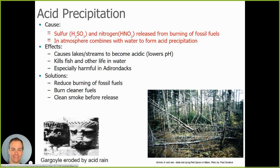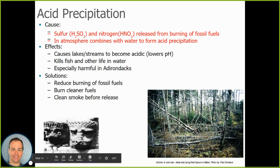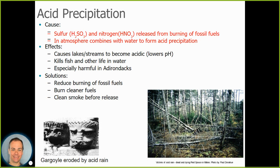Certain ecosystems are more vulnerable to acid precipitation. Spruce forests, like those found in the Adirondacks, and soils that can't neutralize acidic rain are more vulnerable. In Maine, spruce trees are dying off because of acid precipitation. There are certain lakes and ponds in the Adirondacks that have no life in them because they've become so acidic over time.